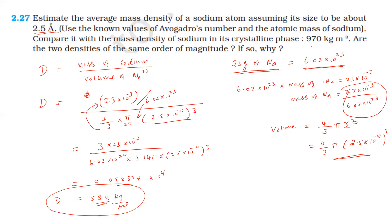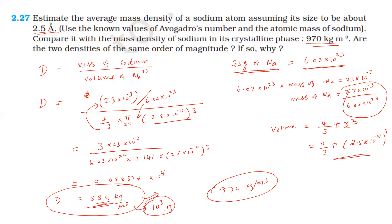The density of the sodium atom is approximately 580 kg per meter cube. In the crystalline state, the density of sodium is 970 kg per meter cube. Both values are of the order of 10 cubed kg per meter cube, so they are of the same order of magnitude.